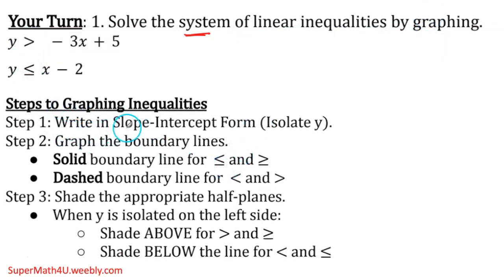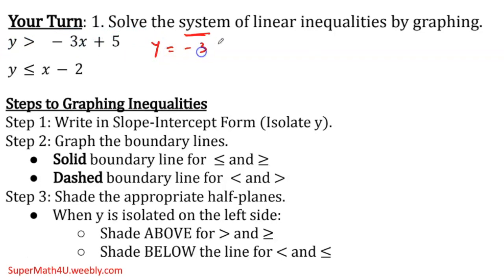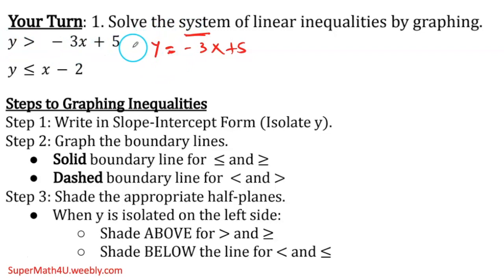The first step is writing slope-intercept form. What I'm going to do is take every inequality and write it in slope-intercept form. I turn that inequality into an equation and then I leave the y by itself. You notice there's no work to do because the y is already by itself — which is what they're asking: isolate it.